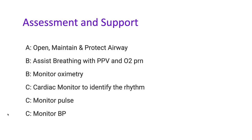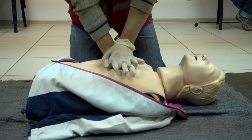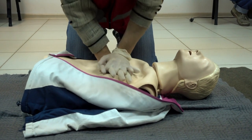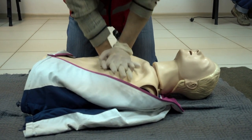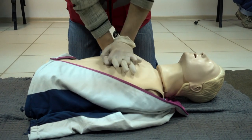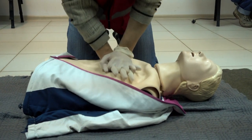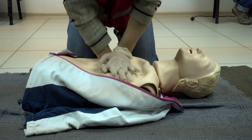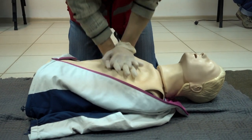If the child's heart rate is below 60 despite good oxygenation and ventilation and has serious signs and symptoms, immediately start high quality CPR. High quality CPR means pushing hard, pushing fast at a rate of 100 to 120 pushes per minute. Remember to allow full chest recoil, do not interrupt CPR for longer than 10 seconds, and do not hyperventilate. Give just enough air to see visible chest rise, and push down one-third of the anterior-posterior chest.